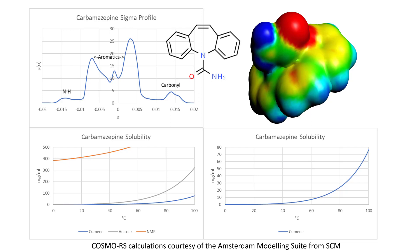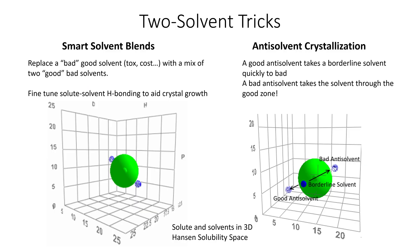Suppose you have found the perfect solvent in terms of solubility, but you can't use it because it's toxic or not green or something like that. One trick is via Hansen solubility — you can find out that a given solvent is outside the solubility sphere. This solubility sphere says that any solvent within this three-dimensional range will dissolve the solute, but a bad solvent outside it will not. If you make a 50-50 blend of two bad solvents, you would have a perfect blend right in the middle.